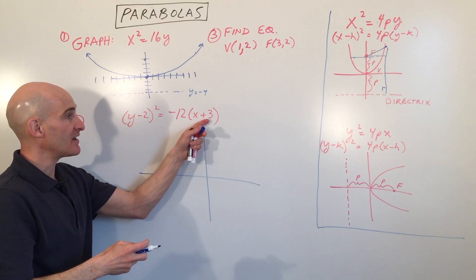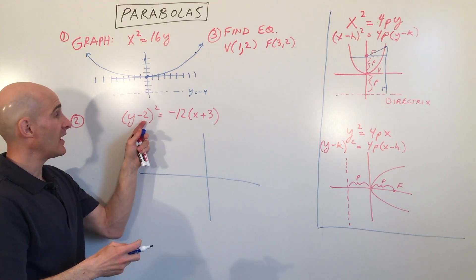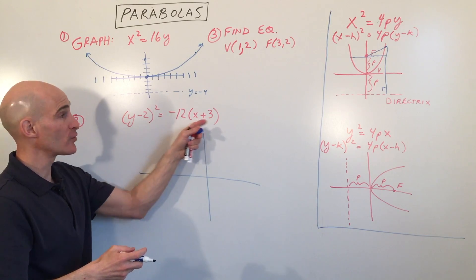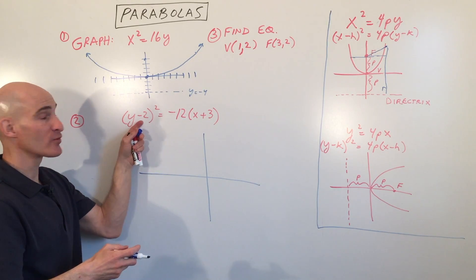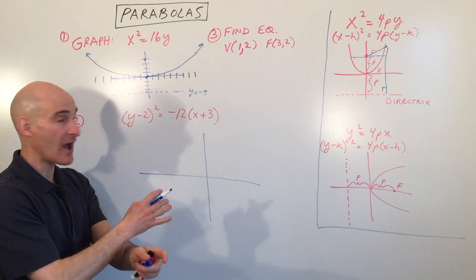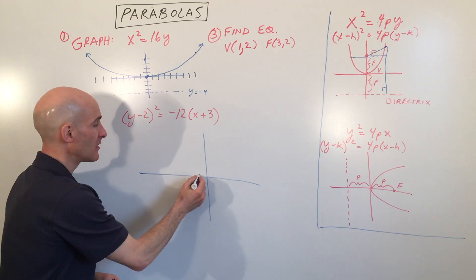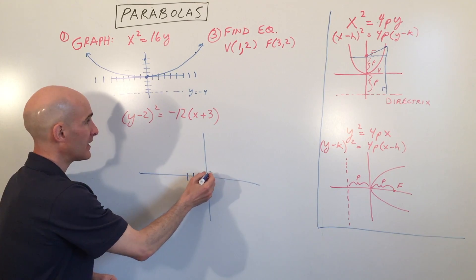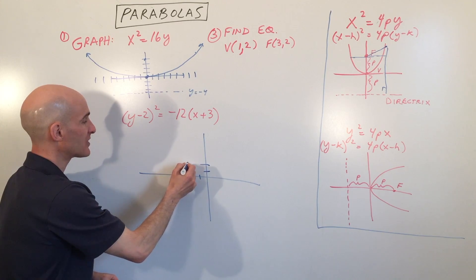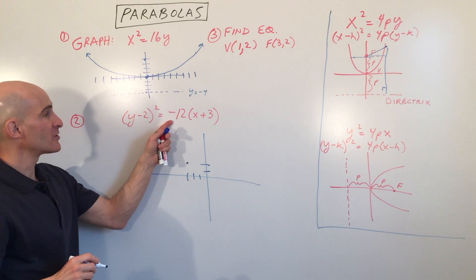So where's the vertex for this parabola? It's going to be at (-3, 2). The one group of the x is the x-coordinate of the vertex. The one group of the y is the y-coordinate. And they have the opposite sign. So this is going to be left 3 and up 2.